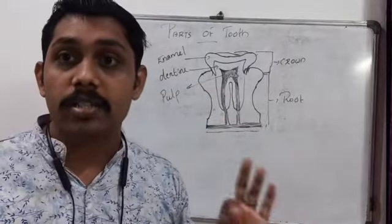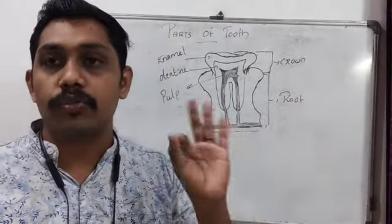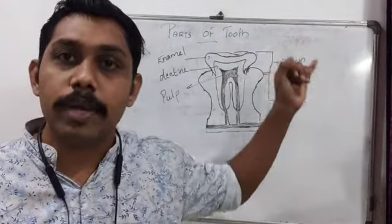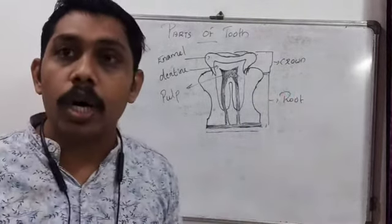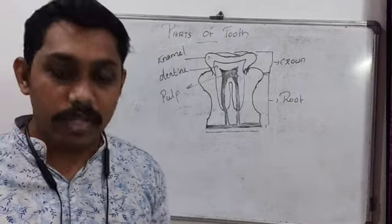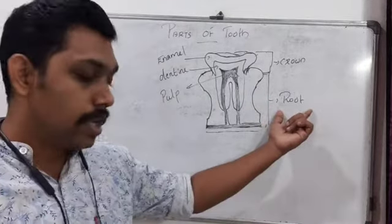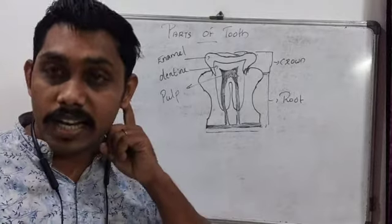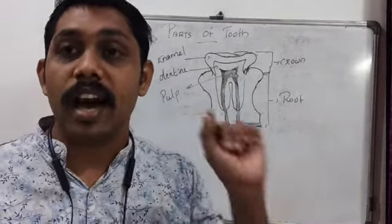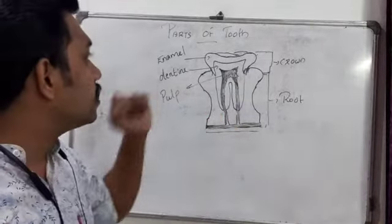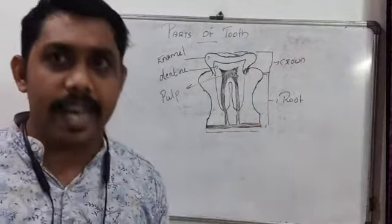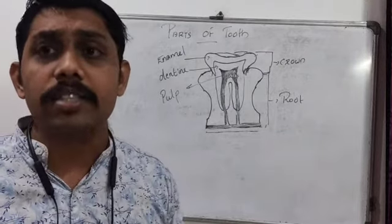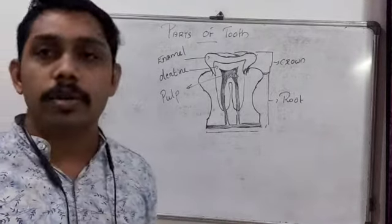So, these are the main parts of the tooth. The visible part is called crown. The part of the tooth inside the gums is called root. The hardest white layer is enamel. Below the enamel is dentine, and the innermost soft part with blood vessels is called pulp.